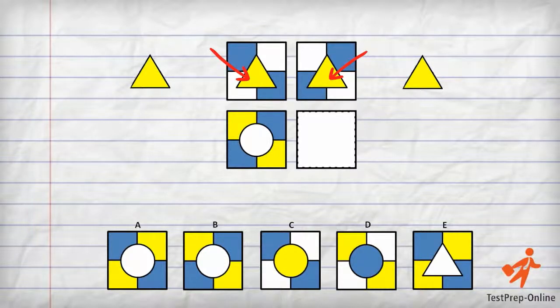Now look at the bottom row. The shapes inside of the boxes will also need to be identical. Since the left box contains a white circle, the right box, our answer, will also contain a white circle.